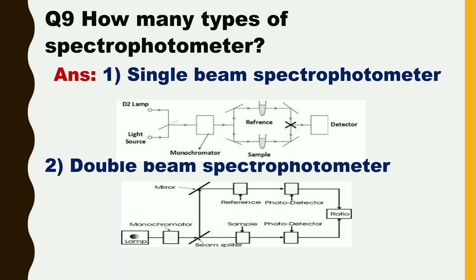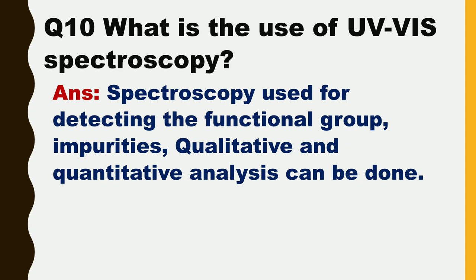Next question is: how many types of spectrophotometer are there? There are two types of spectrophotometer. One is single beam spectrophotometer and the other is double beam spectrophotometer.